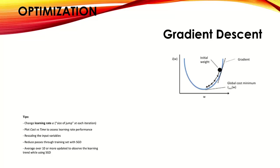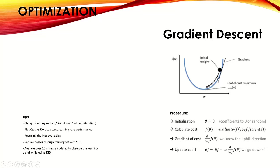Gradient descent is a very commonly used method. The process: initialize theta with zero or a random value, calculate the cost function J(θ), calculate the gradient, and based on the slope update the weights — gradually reducing your error until you reach a minima. The minima can be a global or local minima. Tips to achieve minima quickly: change the learning rate, rescale input variables, or use SGD (Stochastic Gradient Descent).